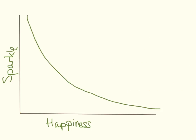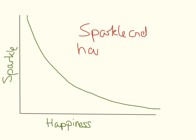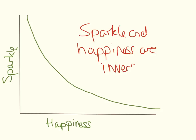This graph is slightly the other way around. We can see when there's a high amount of sparkle, I'm not very happy, and when there's a low amount of sparkle, I'm quite happy. This is a graph that we call inversely proportional, so we can say that sparkle and happiness are inversely proportional.